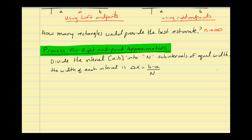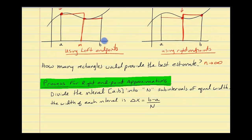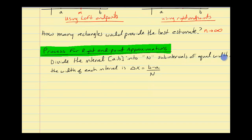For the right endpoint approximation, we divide the interval [A, B] into n subintervals of equal width. The width of each rectangle is delta x, which equals (b minus a) divided by n. So if we had two rectangles, delta x would be (b minus a) over 2. Each rectangle has a base of delta x.